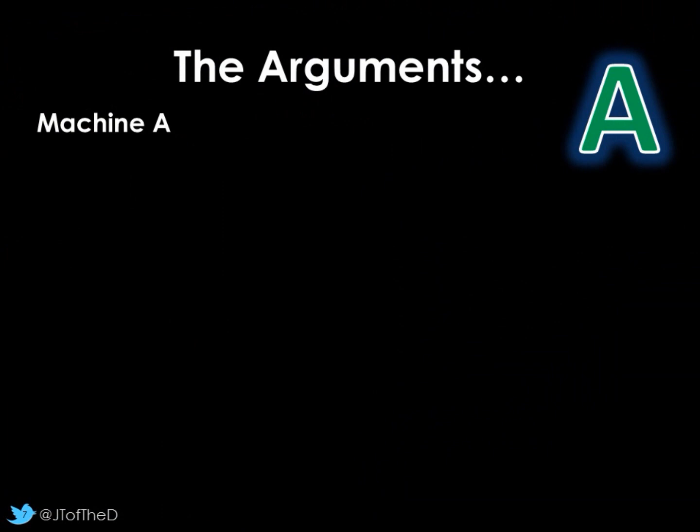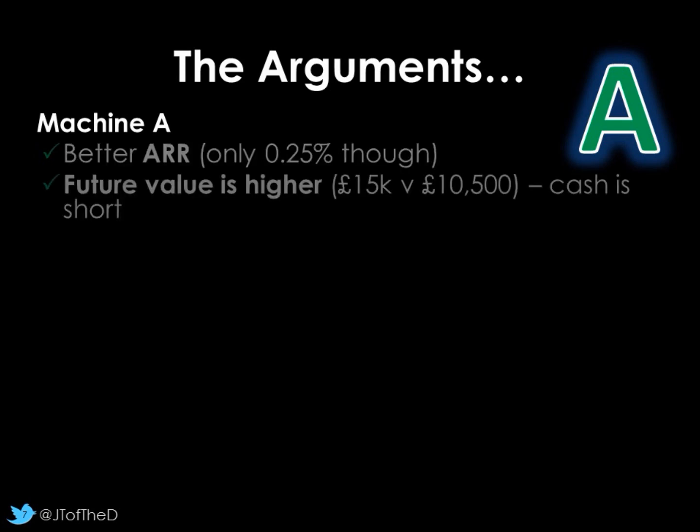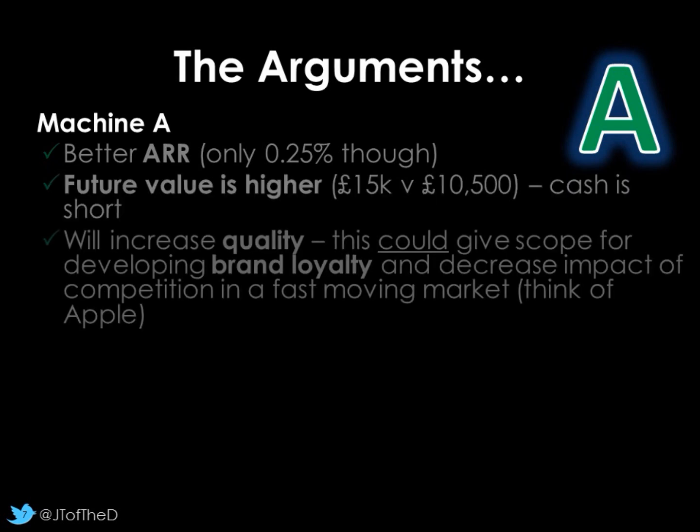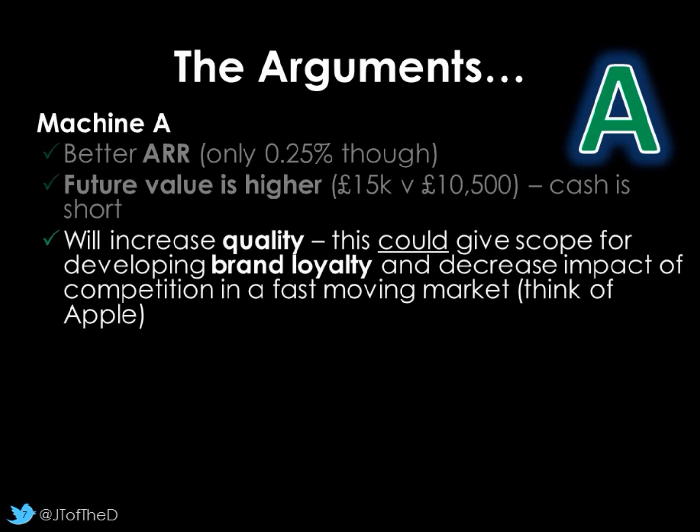The arguments for each side. Machine A has got a better, higher ARR. It's only a quarter of a percent, but it is higher. That's profitability. Is that important for this business? I'm not so sure. The future value is higher. At the end you'll have £15,000 versus £10,500 for machine B. But that's in the future, five years, a long time away. Cash is short now. Machine A will increase quality, which can be important. If you think about brands such as Apple, they're very high quality. That might safeguard us and give us some brand loyalty.